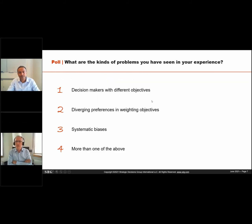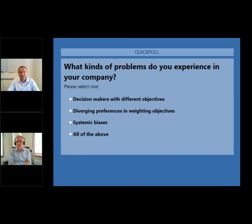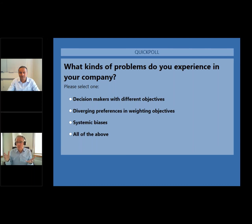It's time for another poll. The question is: what kinds of problems do you experience in your company in regard to making these types of decisions? Is it about decision makers with different objectives? Or diverging preferences in weighting those objectives? Or is it about systemic biases in the organization? Or all of the above? Please start making your entries at this time.